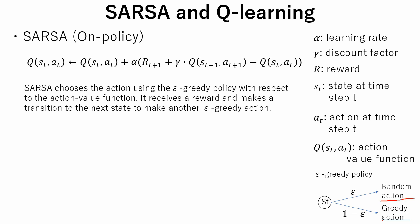Epsilon greedy is a simple method to balance exploration and exploitation by choosing between exploration and exploitation randomly. The epsilon greedy, where epsilon refers to the probability of choosing to explore, exploits most of the time with a small chance of exploring.